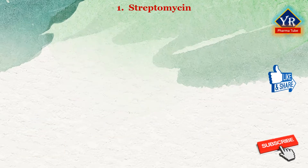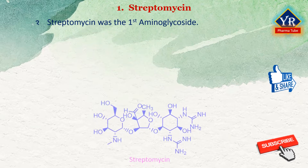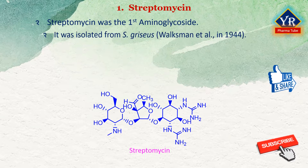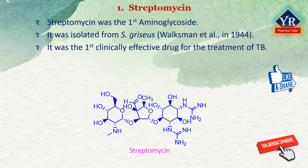The first drug of this lesson is streptomycin. Streptomycin was the first aminoglycoside antibiotic to become commercially available for chemotherapeutic use. It was isolated by Waksman et al. in 1944 from a strain of Streptomyces griseus. This drug proved to be the first clinically effective drug for the treatment of tuberculosis.